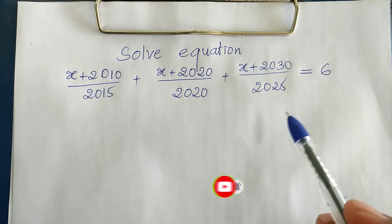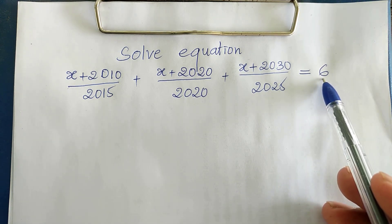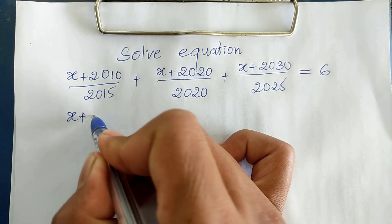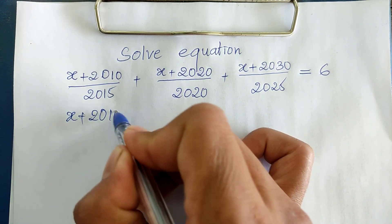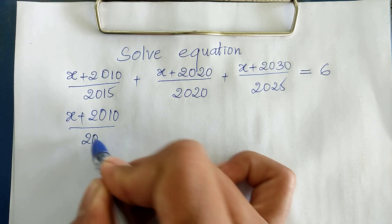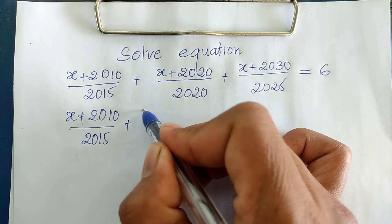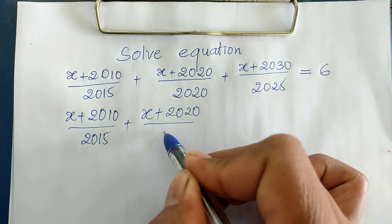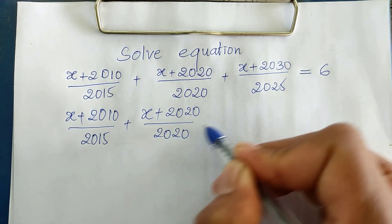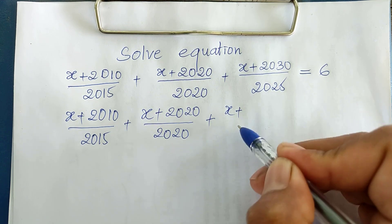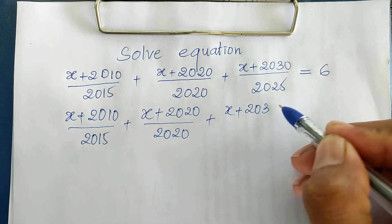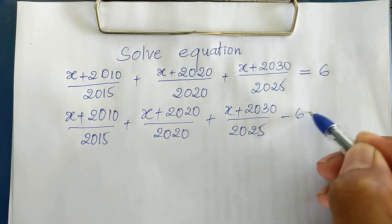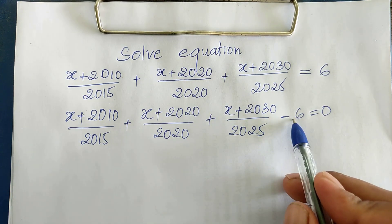Okay, now to solve this equation, I move 6 from the right-hand side to the left-hand side. So I get (h + 2016 + 10) over (2016 + 15), plus (h + 2016 + 20) divided by (2016 + 20), plus (h + 2016 + 25) minus 6.